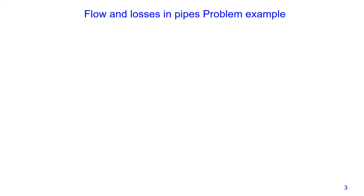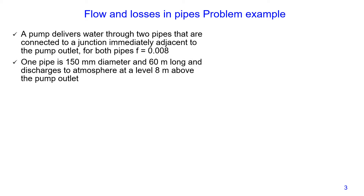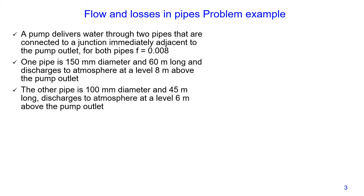Let's introduce the problem. A pump delivers water through two pipes that are connected to a junction immediately adjacent to the pump outlet. Both pipes have a friction factor equal to 0.008. One pipe is 150 mm diameter and 60 m long, and discharges to atmosphere at a level 8 m above the pump outlet. The other pipe is 100 mm diameter and 45 m long, and also discharges to atmosphere at a level 6 m above the pump outlet.